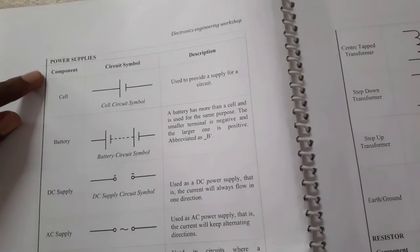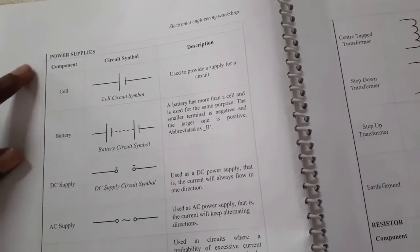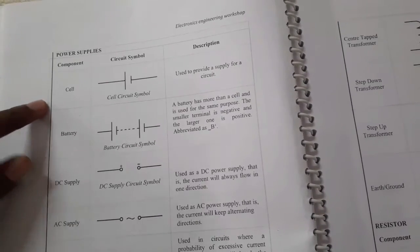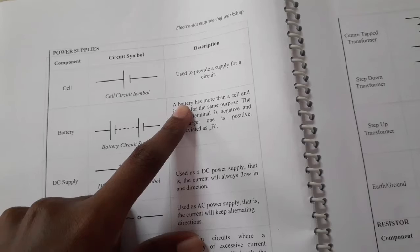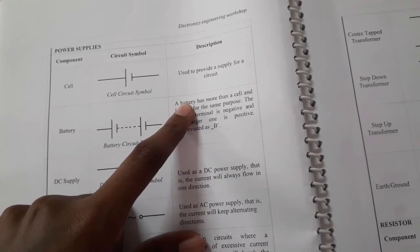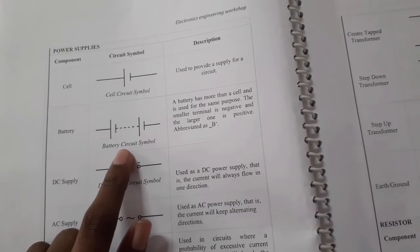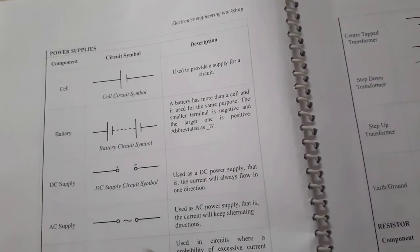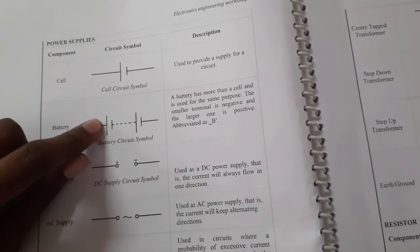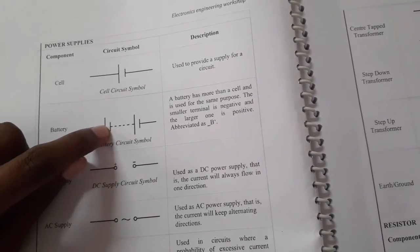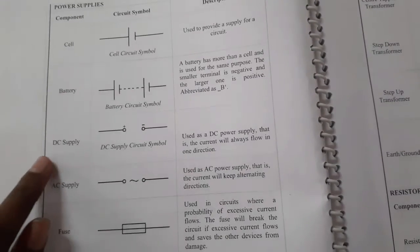The second category is power supplies. The first type is a cell — this is the circuit symbol, used to provide a supply for a circuit. Next is a battery. A battery has more than one cell and is used for the same purpose. The smaller terminal is negative and the larger terminal is positive.